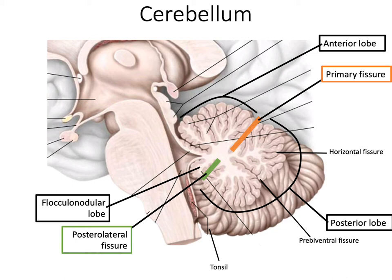In addition to these lobes, we have a few fissures we need to know. We have the primary fissure, which separates the anterior lobe from the posterior lobe. In addition, we have the posterolateral fissure, which separates the posterior lobe from the flocculonodular lobe.